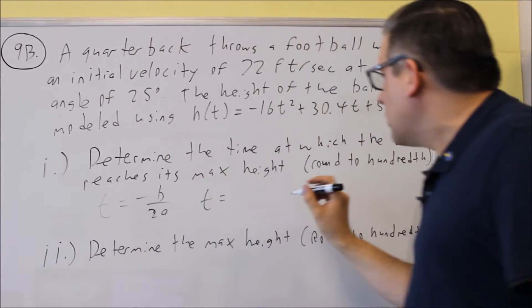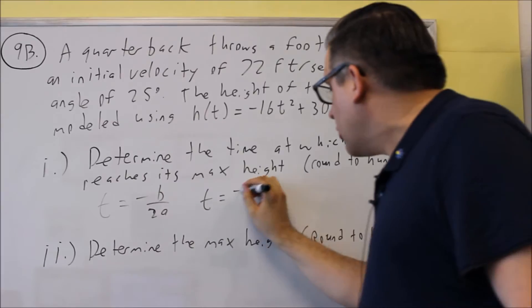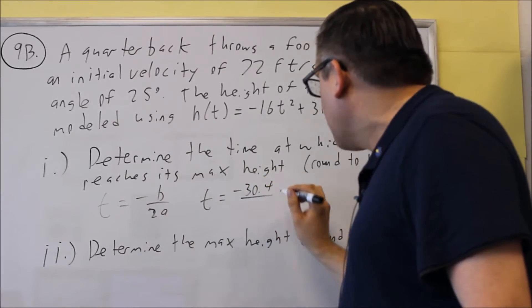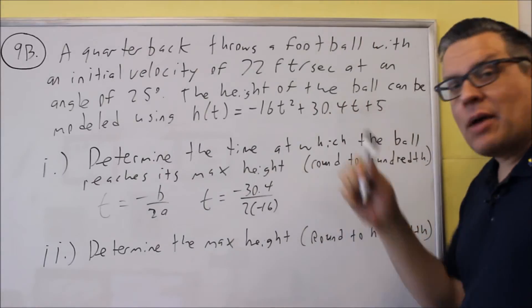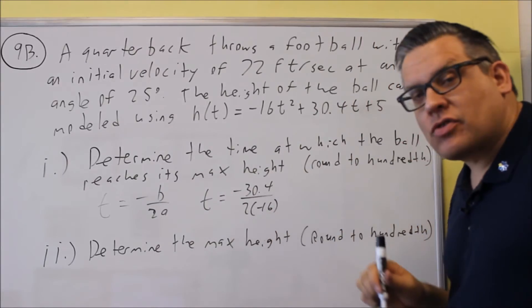So, in this case, the B would be this 30.4, so we're going to do negative 30.4. In the bottom, we have 2 times A, so we have 2 times negative 16.